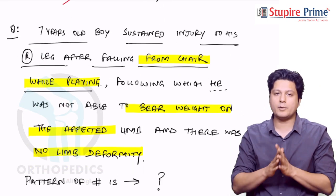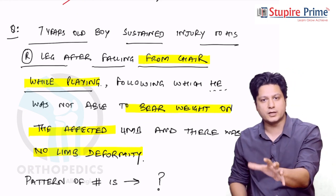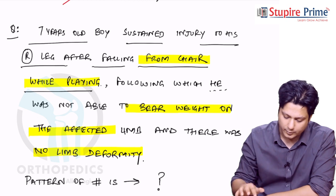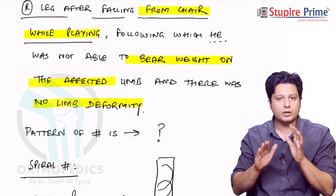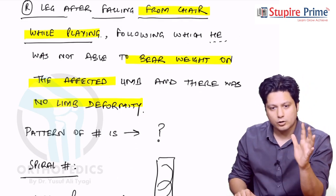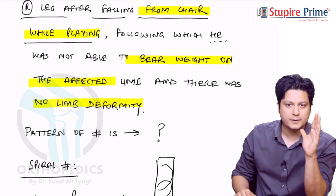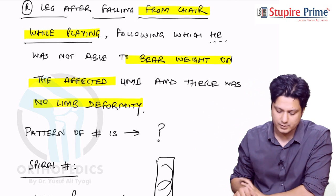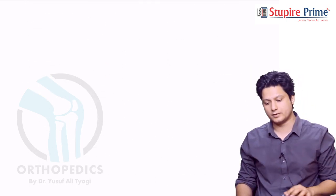Second point: following which he was not able to bear weight, that means there is a fracture - it is a significant injury that resulted in the fracture. And the third point is that there was no deformity of the limb. All of these previously kept hints are now finalized, culminated into your final diagnosis, and the final diagnosis for that question is a spiral fracture.